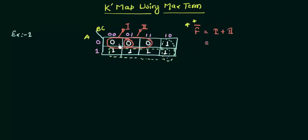Now let's write what is the value of 1. It is: A is not changing in the first group, so I will write it as A complement because A is 0. B is also not changing. It is 0 here and again it is 0, so I will write it as B complement. And you can see that C is changing from 0 to 1, so we are not going to write C in this one.